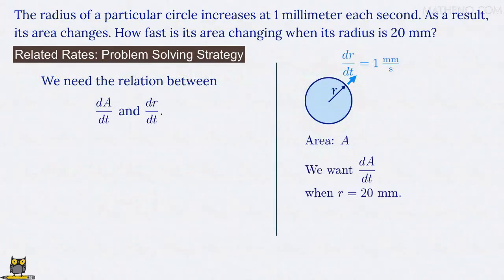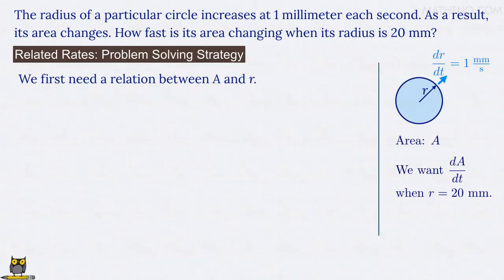In order to find that relation, we first back up a step and need to find a relation between A and r. That takes us to the second step of our problem-solving strategy, to write an equation that relates the quantity of interest, in this case between A and r.